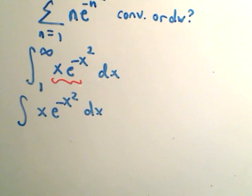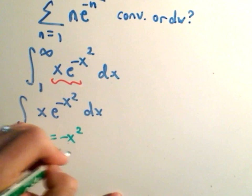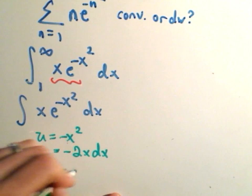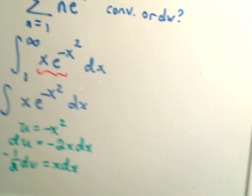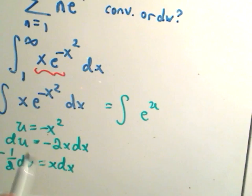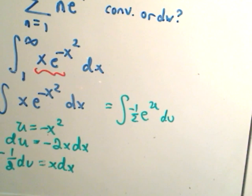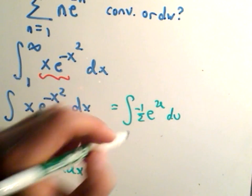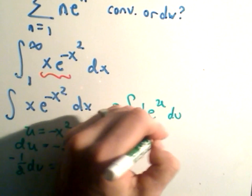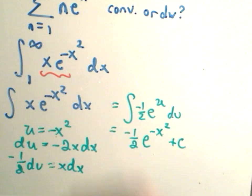So I'm going to do a u substitution here. I would let u equal negative x squared. The derivative of that will be negative 2x dx. So divide by negative 1 half, you get x dx. So when we go to rewrite our integral with our substitution, we'll get e to the u. And again, x dx is being replaced by the negative 1 half du. When you integrate negative 1 half e to the u, you simply get negative 1 half e to the u, which again is negative x squared.